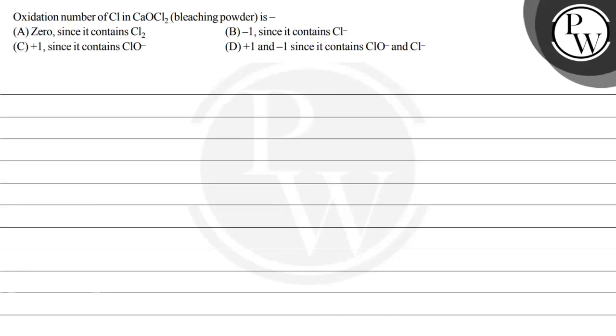Hello, let's read this question. The question says oxidation number of Cl in CaOCl2, that is bleaching powder, is... and we have four options over here.